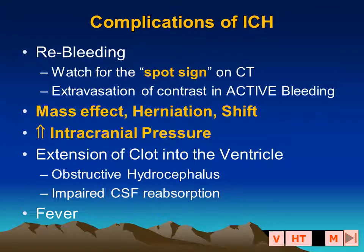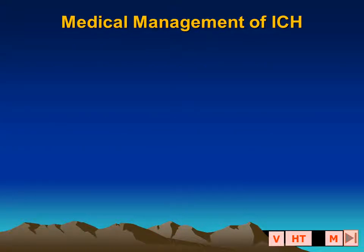Complications of spontaneous intracerebral hemorrhage include an expanding hematoma or re-bleeding — watch for the spot sign on contrast-enhanced CT. There can be mass effect, herniation and shift, increased intracranial pressure, and extension of clot into the ventricle that may cause the patient to have a fever.